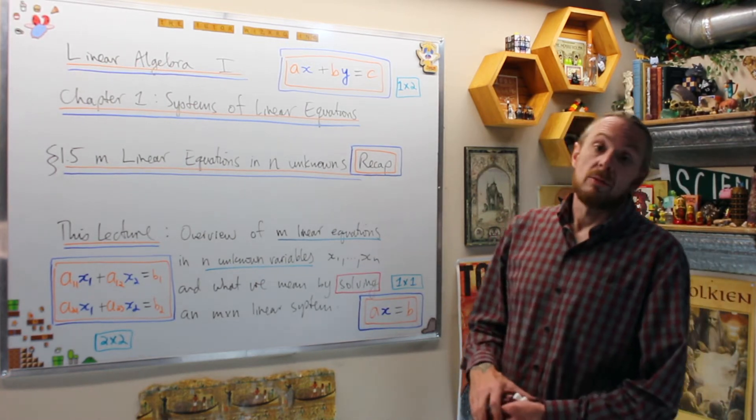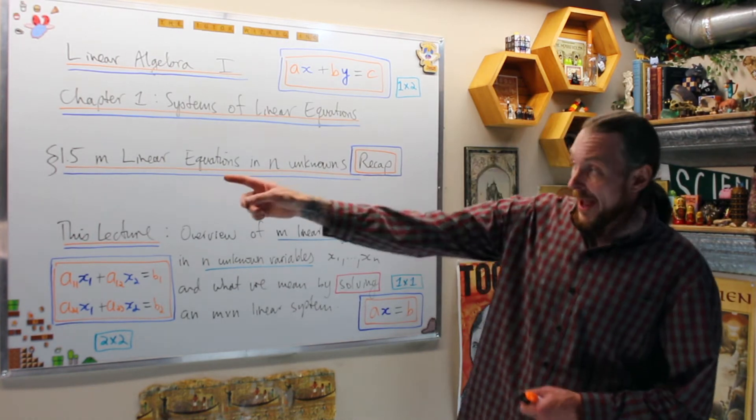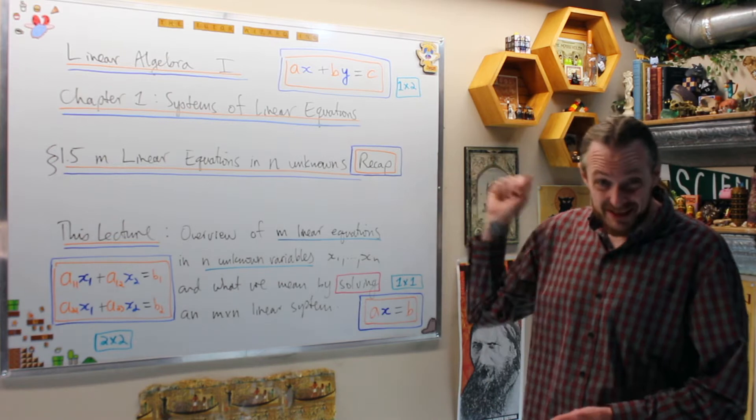We're doing linear algebra 1. This is chapter 1, systems of linear equations. Right now we're doing M linear equations and N unknowns, and this is the recap.